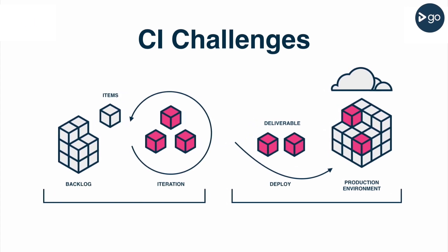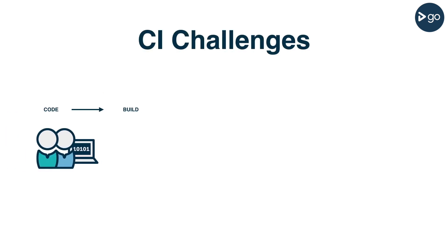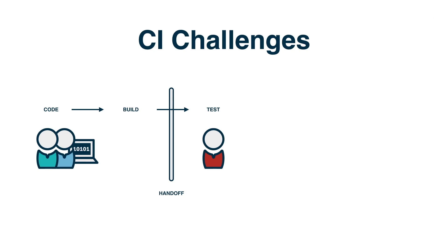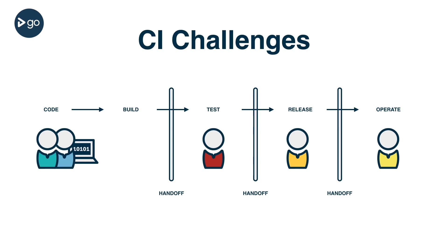This fear resulted in walls being built between development and operations. All too often, moving the software along the process takes the form of being thrown over the wall to a separate QA group for additional testing, or an IT operations group for deployment to production. The group now responsible for deploying the software has other things they are working on, so the deployment schedule is determined by when people can do the work instead of when the business needs the software.